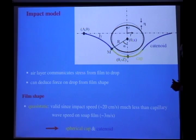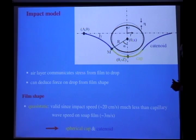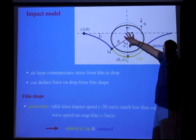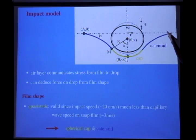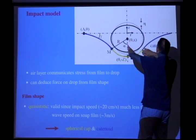The approximation is that this is quasi-static: the shape of the film at any given instant only depends on the current position of the drop. That turns out to be true because the wave speed on soap films is very high — about three meters per second. So if our motion is much slower than that, these waves basically go off immediately and communicate information to the walls and back. The film responds quasi-statically.